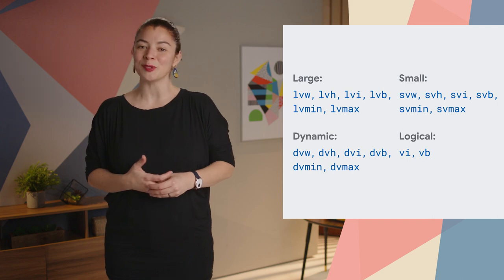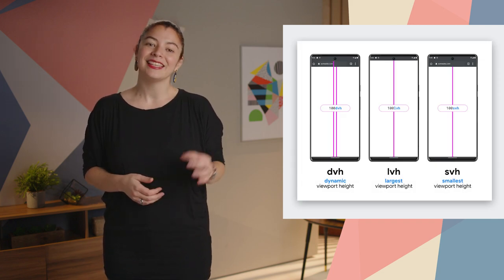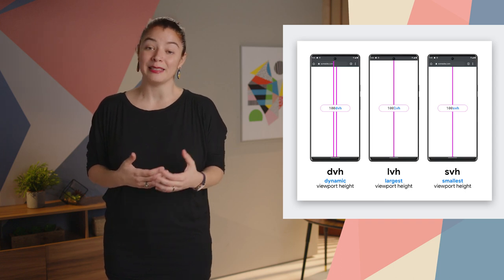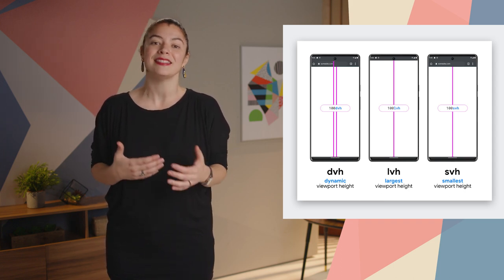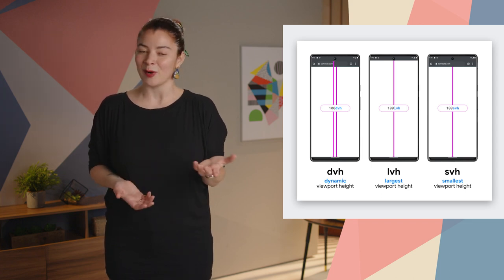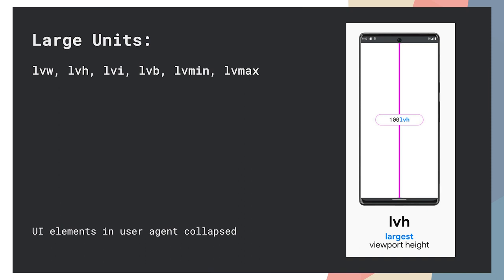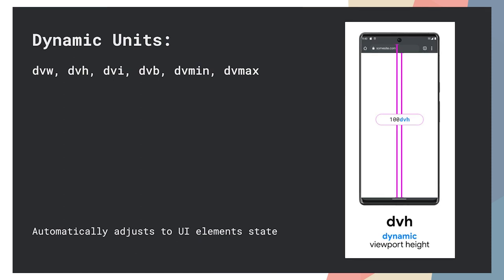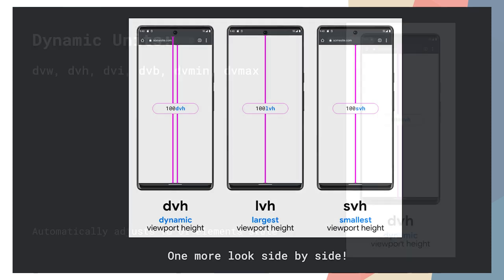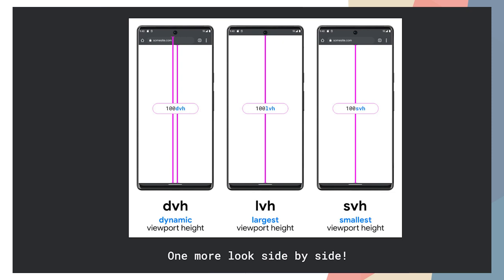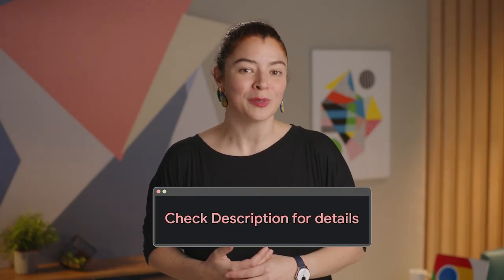The new viewport units give you more control to create adaptive UIs. These units measure the viewport area differently, depending on how they take into account UI elements in the browser that can be expanded or collapsed, like the address bar. The large units provide the viewport size assuming those interfaces are collapsed. The small units provide viewport size assuming the interfaces are expanded. And with dynamic units, the viewport size will automatically adjust itself in response to browser interface elements being shown or not. The value in these units will be anything within the limits of the large units — the maximum — and the small units — the minimum. Check out the article in the description for more information.